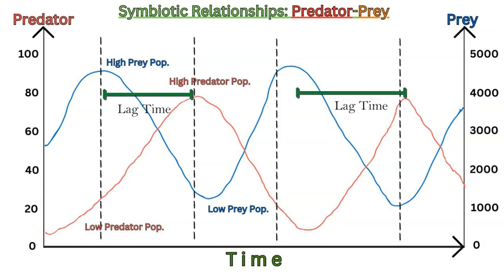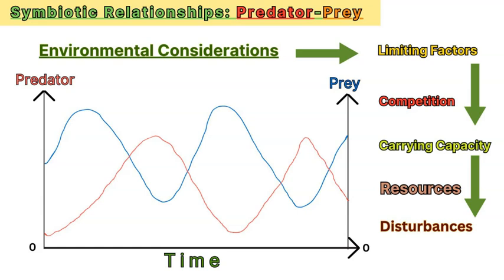As prey declines, the carrying capacity changes and many predators die off with less food available. This then allows a resurgence of the prey population, and the cycle continues as long as the environment and limiting factors exist in balance or equilibrium. This symbiotic relationship — one predator, one prey — and the pattern of population increase and decrease over time is a fantastic way to explain these natural balances in environments, food chains, and food webs.